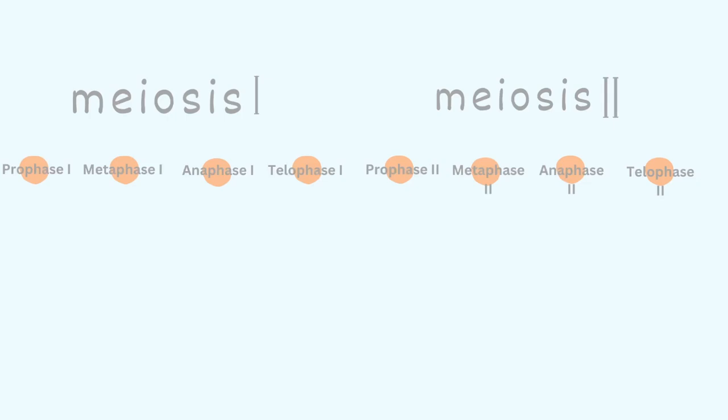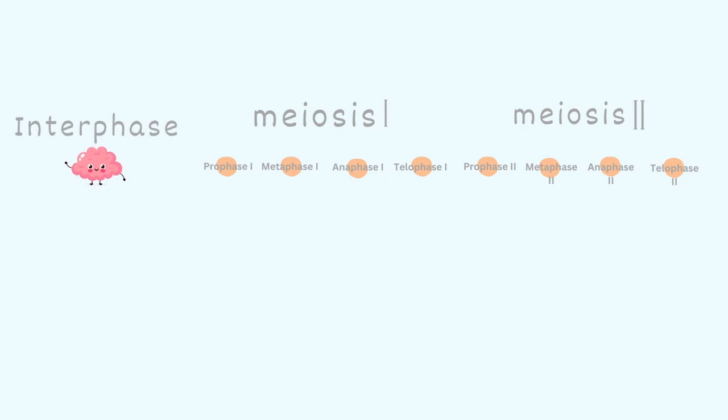Notice that between telophase 1 and prophase 2, there is nothing in between — no interphase. We go straight from telophase 1 to prophase 2. However, we do have interphase at the beginning of meiosis 1.